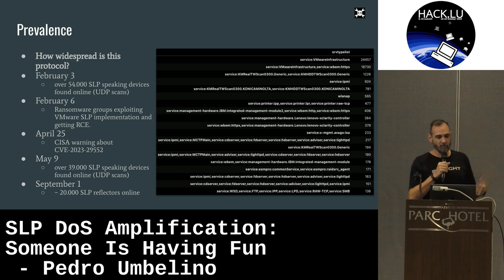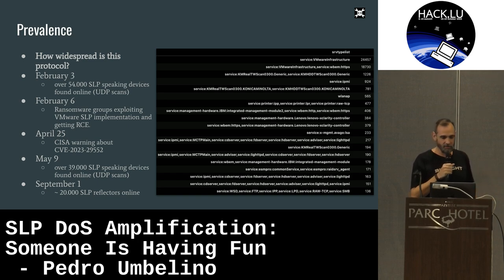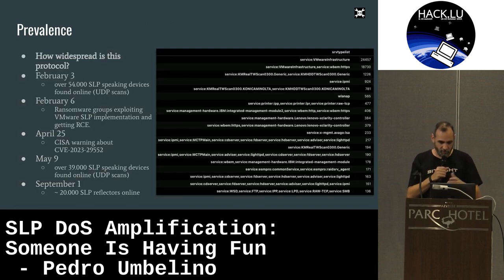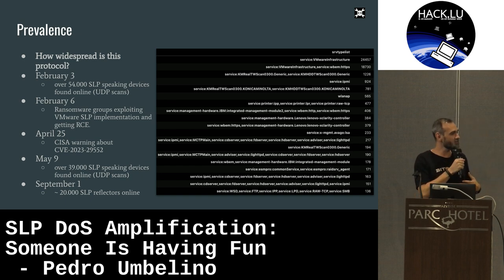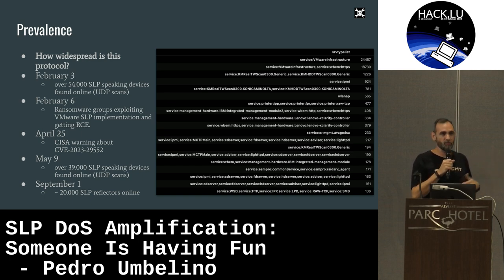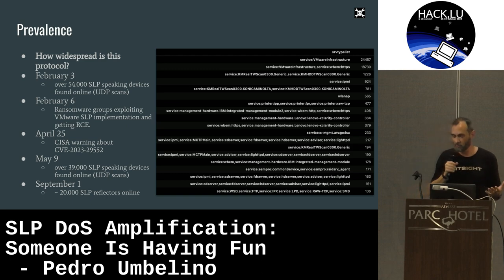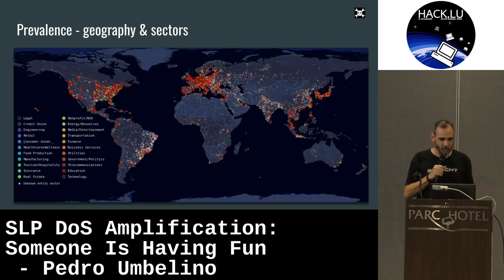On April 25th, we coordinated a disclosure with CISA. It took some months to reach all the vendors, and since then the instances have been dropping, but there are still a lot found online. What exactly speaks SLP? We found more than 670 different signatures — ESXis, printers, RAID controllers, IPMIs, routers. There's a bunch of different stuff that actually speaks SLP. It's pretty well distributed geographically and across all sectors.